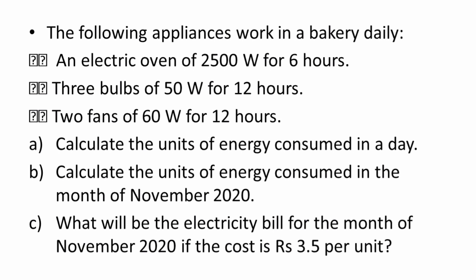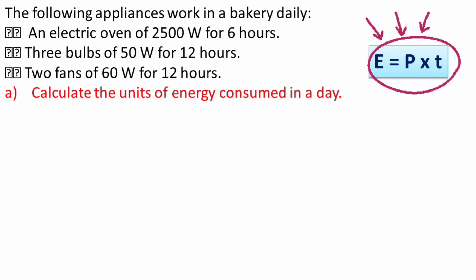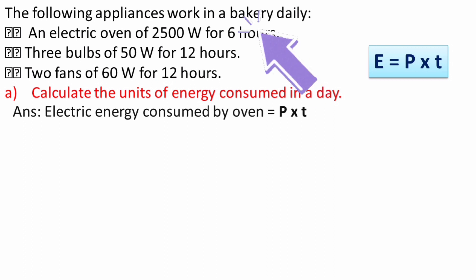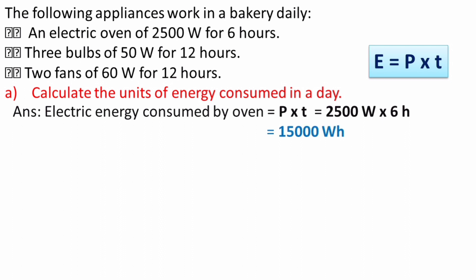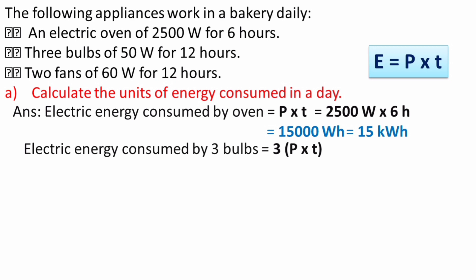First let's solve the first sub-question: units of energy consumed in a day. We have to calculate the energy consumed by each appliance separately. For the electric oven, using E = P × T, the power is 2500 watts and the time is 6 hours, so E = 2500 × 6 = 15,000 watt hour. Converting to a bigger unit, that is 15 kilowatt hour. So the energy consumed by the oven is 15 kilowatt hour.